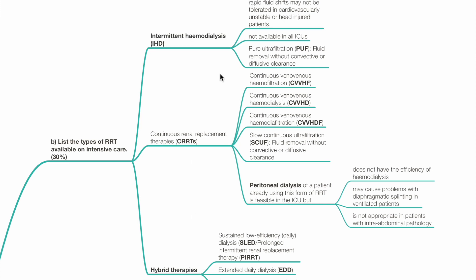Intermittent hemodialysis is cheaper, efficient but more rapid fluid shifts may not be tolerated in the cardiovascularly unstable. IHD is not available in all ICUs. Pure ultrafiltration, PUF, refers to fluid removal without convective or diffusive clearance.